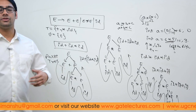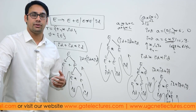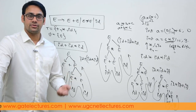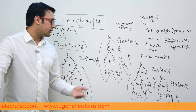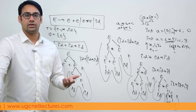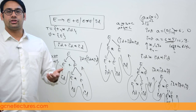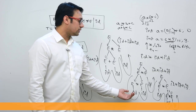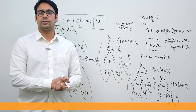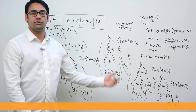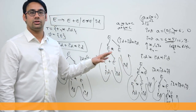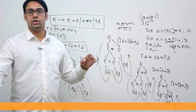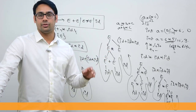For ambiguous grammar, there are generally two reasons for ambiguity. Number one: if the grammar is failing the rules of precedence, we can get ambiguity. Number two: if the grammar is failing the rules of associativity, we are going to get ambiguity. So to remove ambiguity from a grammar, the grammar should follow the rules of precedence and the grammar should follow the rules of associativity.